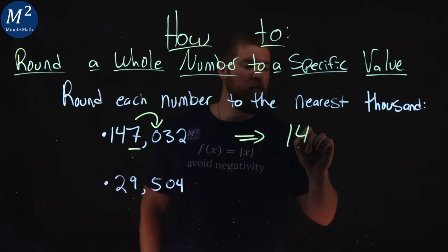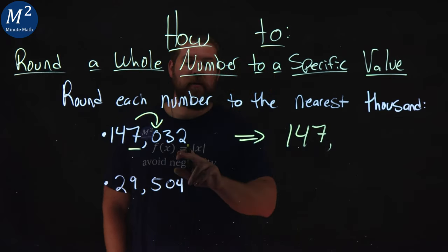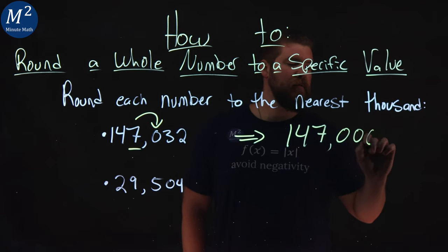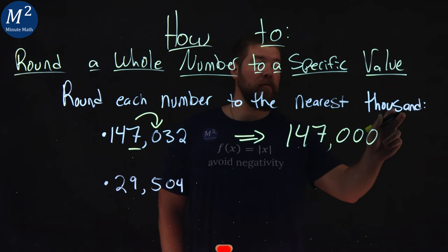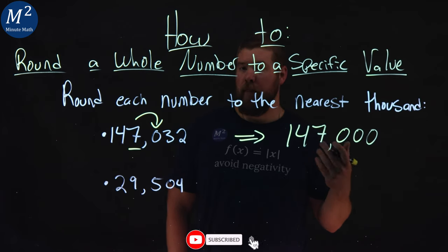So we have 147 stays the same, and for the rest we have 0. And so 147,032 rounded to the nearest thousand is 147,000.